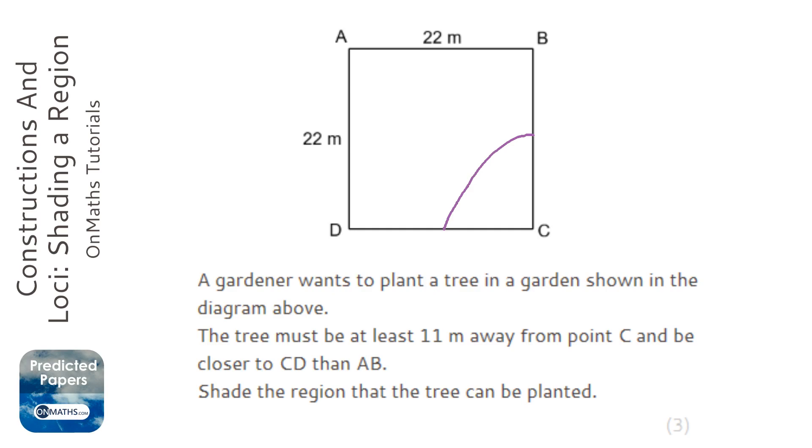It also says the tree must be closer to CD, which is this line here at the bottom. It must be closer to this line than line AB, which is this line here. So what we need to do is draw a straight line across there.